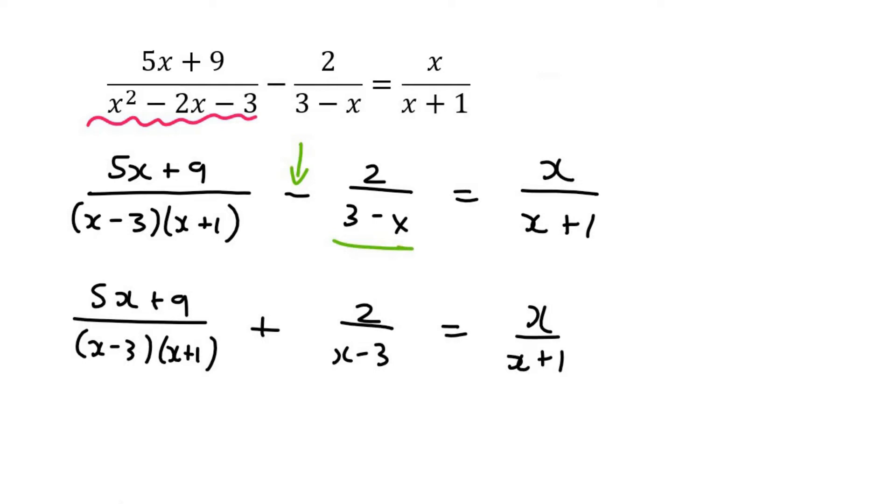So now we can easily say that our lowest common denominator will be x minus 3 and x plus 1. And so if we do the restriction, we would eventually see that x must not be 3 or x must not be minus 1.